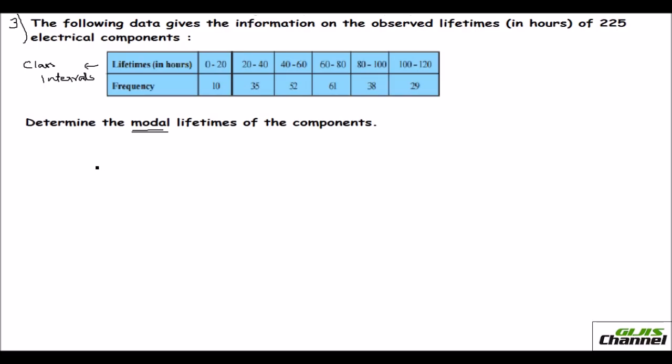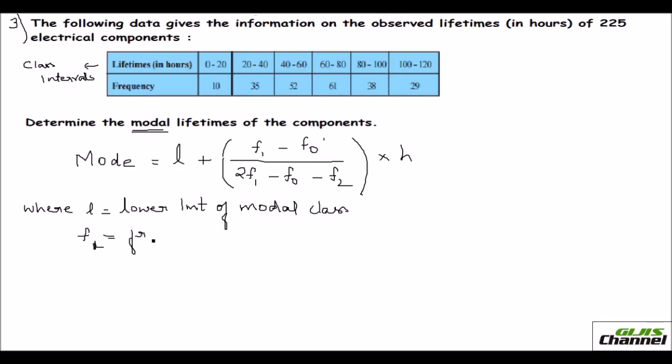See, for this you have a formula. Mode is equal to L plus F1 minus F0 divided by 2 times F1 minus F0 minus F2 times H. So this is the formula for finding out the mode. I'll tell you what these are. L is the lower limit of the modal class. F1 frequency of modal class. F0 as frequency of previous modal class. F2 is frequency of next modal class.